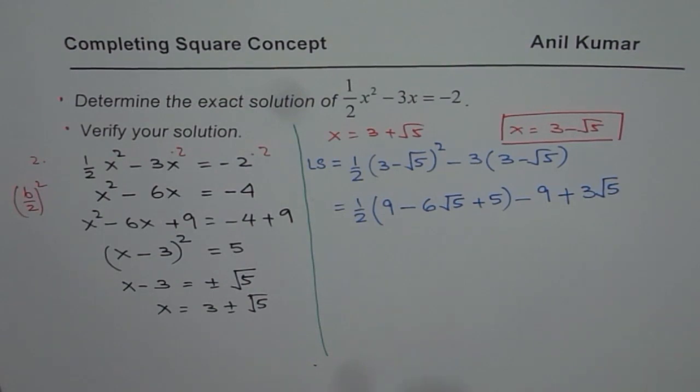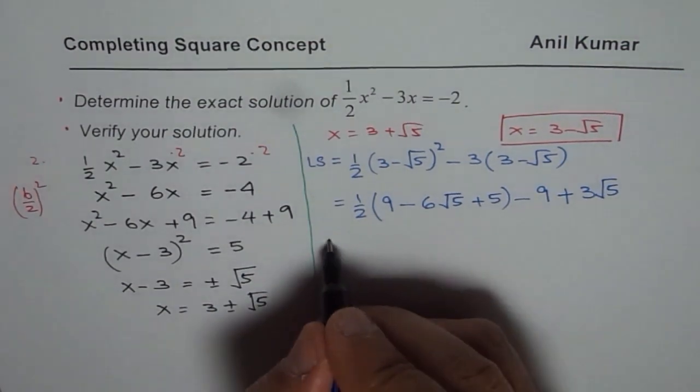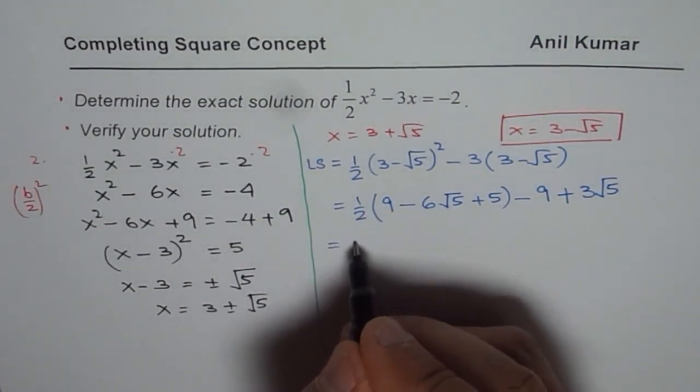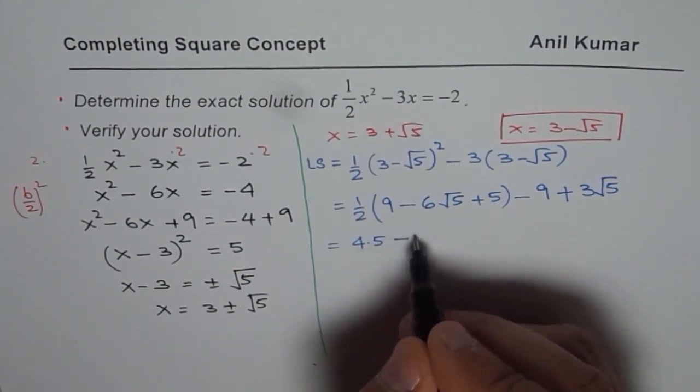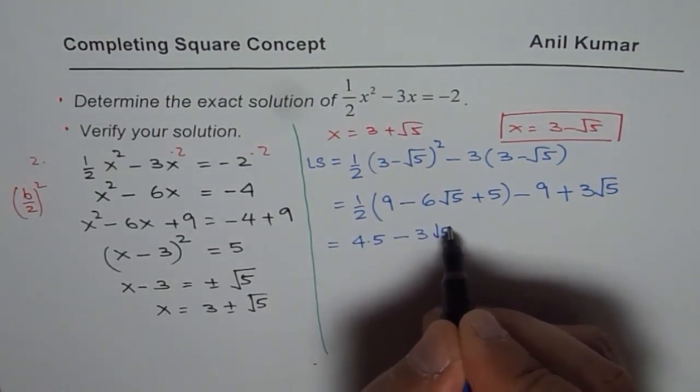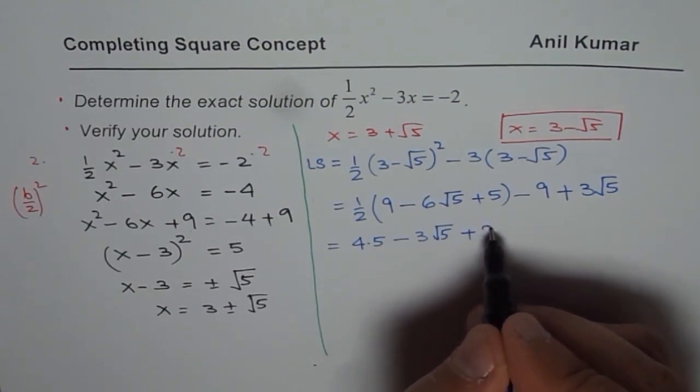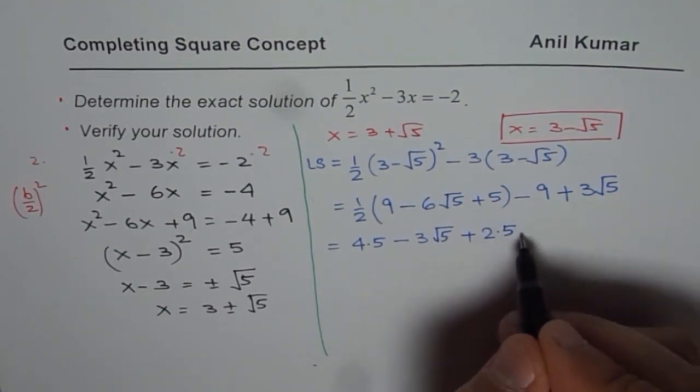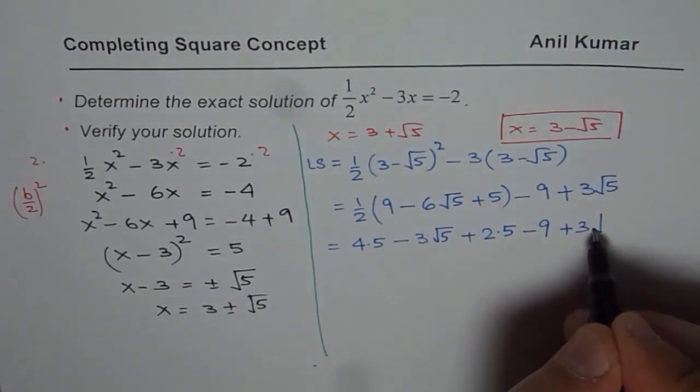Now in this particular case, let me open this bracket and see what do I get. So I get half of 9 which is let's say 4.5 minus 3 square root 5 plus half of 5 is 2.5, okay? Minus 9 plus 3 square root 5.